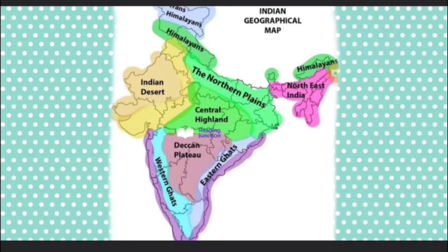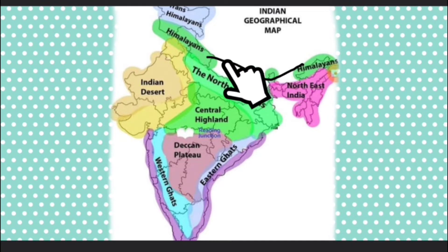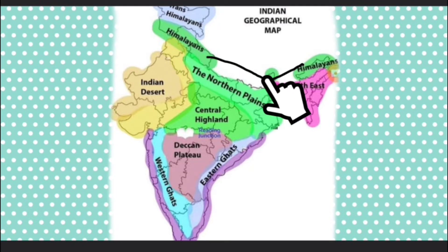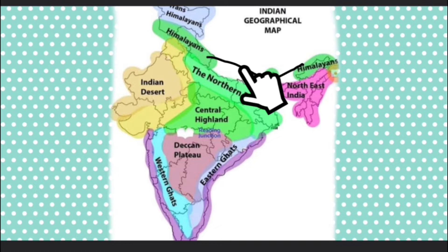India has many rivers and mountains. Our country is not the same everywhere — in some places there are high mountains, at others there is level land. To the north is the Great Himalayan Mountain Range. It is the highest mountain range in the world. The word Himalayas means the 'abode of snow.' Most of the peaks of the Himalayas are covered with snow. Mount Everest is the highest peak in the Himalayas and also the highest peak in the world.